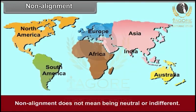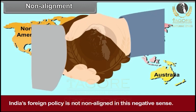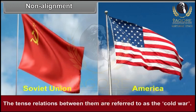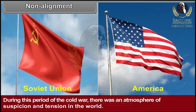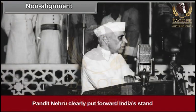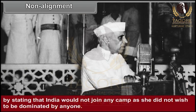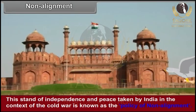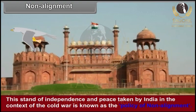Non-alignment does not mean being neutral or indifferent. India's foreign policy is not non-aligned in this negative sense. After the Second World War, the Soviet Union and the United States of America emerged as the two superpowers. The tense relations between them are referred to as the Cold War. During this period, there was an atmosphere of suspicion and tension in the world. Both superpowers were trying to pull the newly emerging independent countries into their camps. Pandit Nehru clearly stated that India would not join any camp as she did not wish to be dominated by anyone, but hoped for cooperation from all countries. This stand of independence and peace taken by India in the context of the Cold War is known as the policy of non-alignment, and it is another remarkable feature of India's foreign policy.